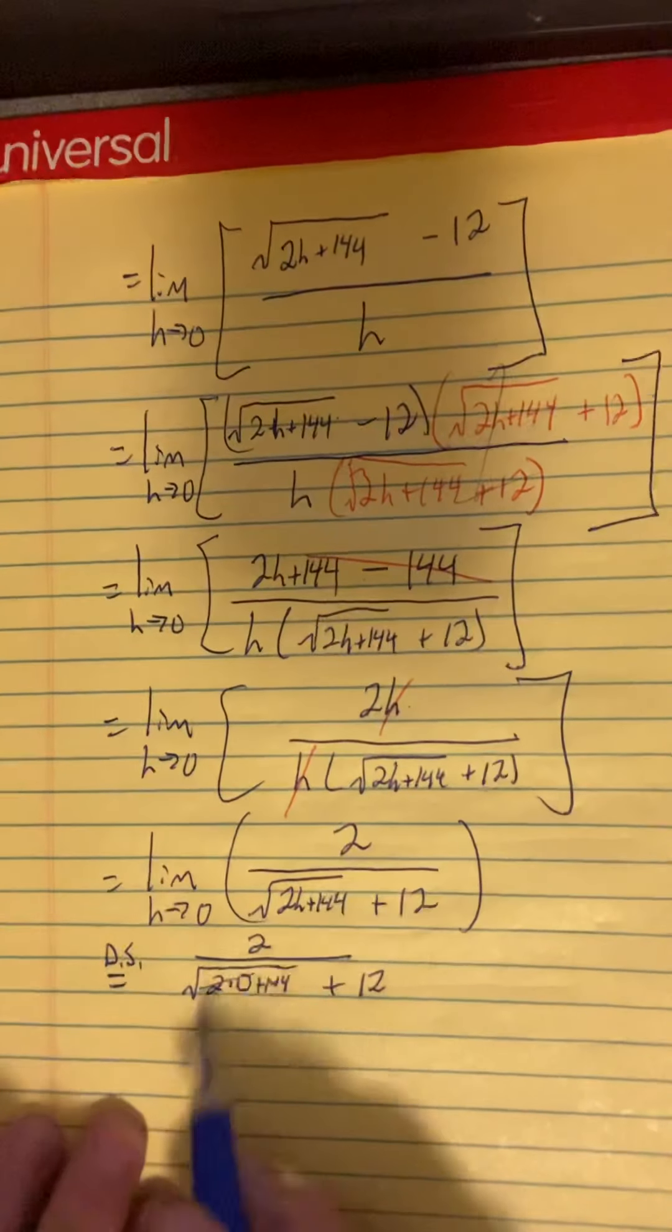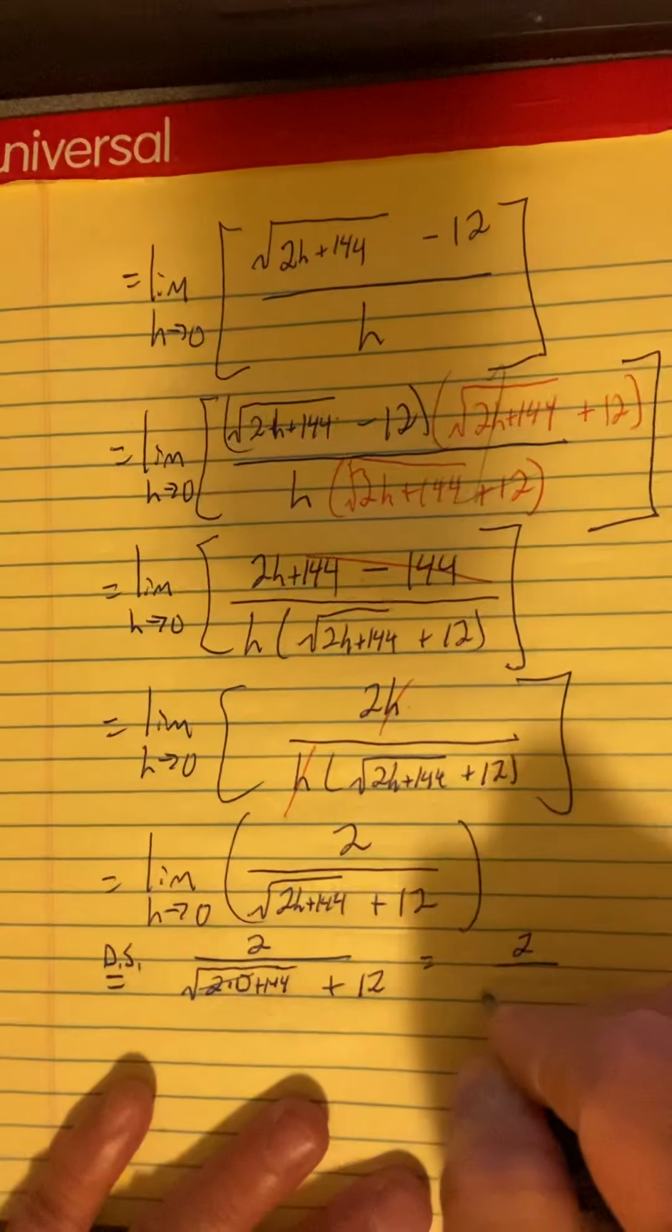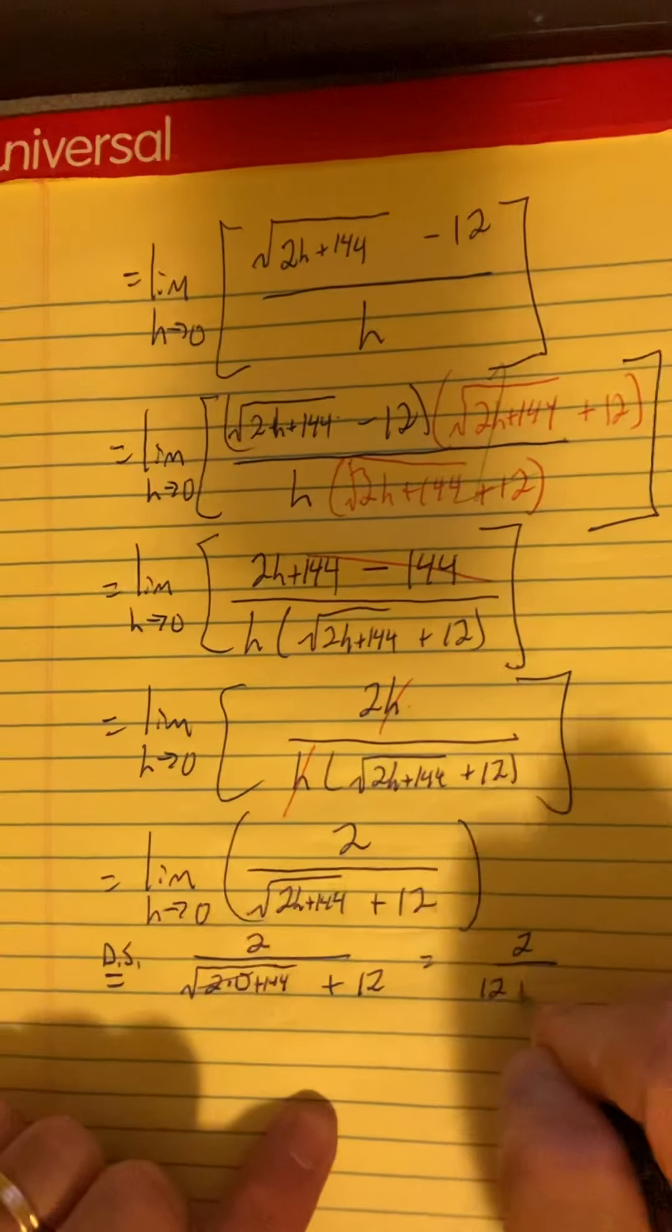That'll give us two over the square root of two times zero plus 144 plus 12. Well, that's zero. That goes away. So you just have the square root of 144. Well, we know the square root of 144 is 12. We've done that several times in this problem already.